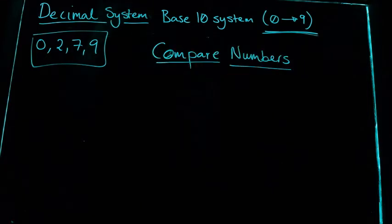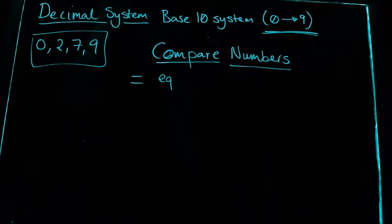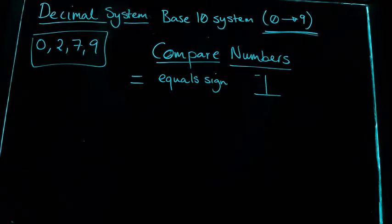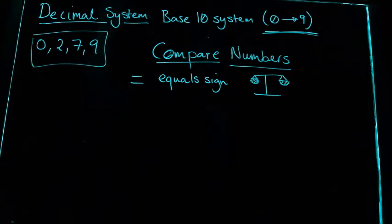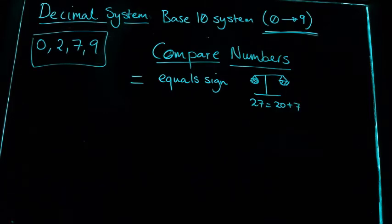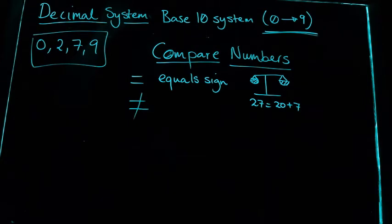When comparing numbers, the first sign of value is the equal sign. I think of this as a set of balances: if the balance is level, both sides have the same value. For example, 27 equals 20 plus 7 — twenty tens plus seven units — both sides are equal and the balance will be level.